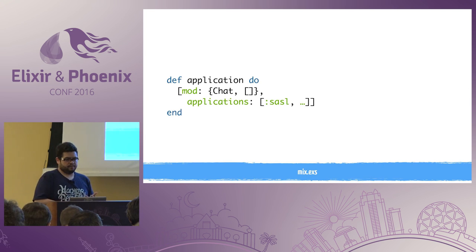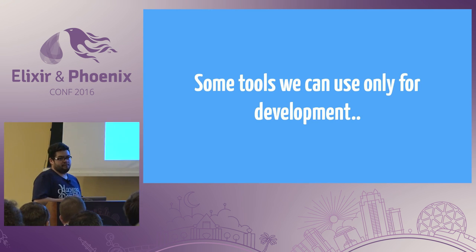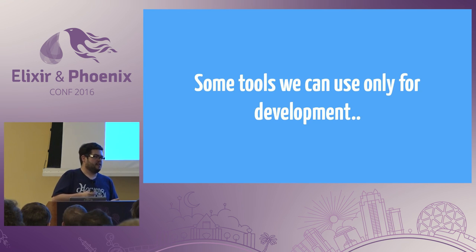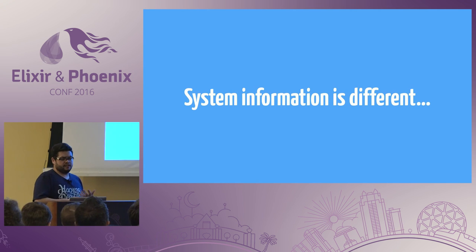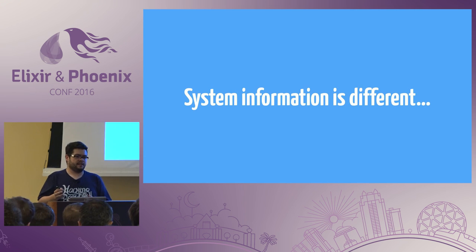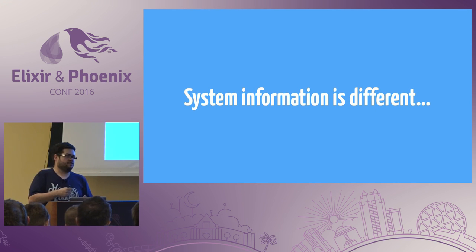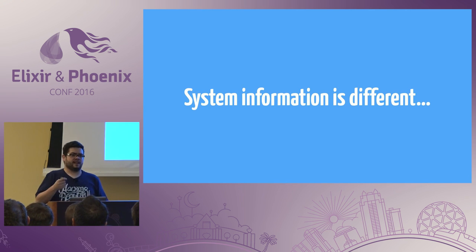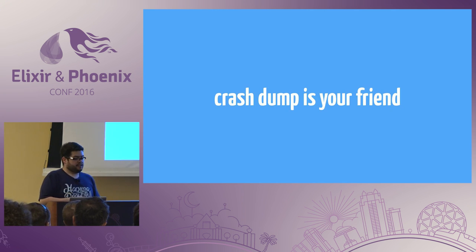So let's recap what we saw at this starting point of my journey. Some tools we can use only for development: IEx.pry and Debugger. And if you try another tool, I recommend you check if the tool doesn't block your process, because if you're using it in production it's not a good idea. And we saw that system information is different — if you try to see the CPU, probably you will see only the scheduler information, not actual CPU. We need to know that schedulers can be configured — you can set them down, or you can create more schedulers than your threads. Crash dump is our friend.